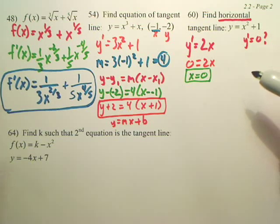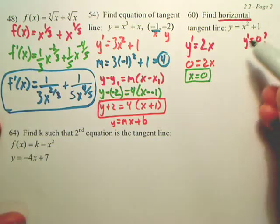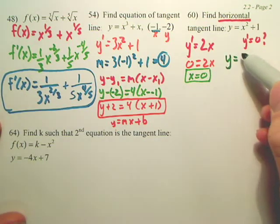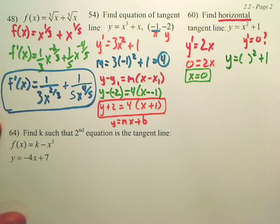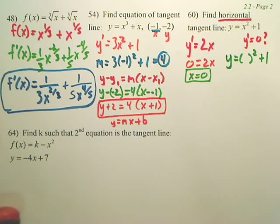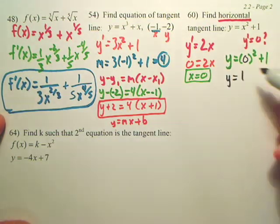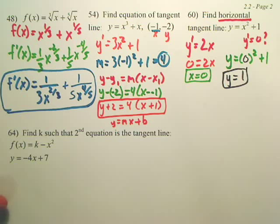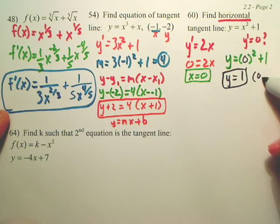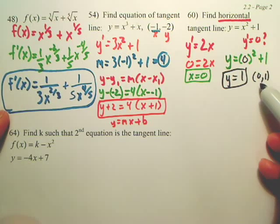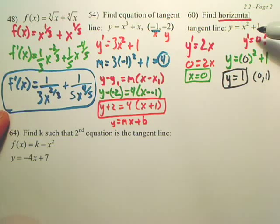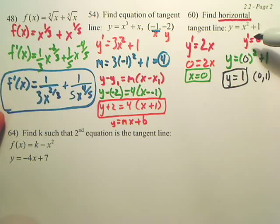We just need to find out how high that tangent line is. So, wouldn't we just plug this into the original equation? If we plug in the 0 to the original equation, don't you get y equals 1? So, the coordinate is 0, 1. That is where, for this graph, you'd have a horizontal tangent line. Basically, it's the vertex.